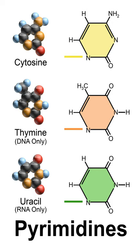In March 2015, NASA Ames scientists reported that, for the first time, complex DNA and RNA organic compounds of life, including uracil, cytosine and thymine, have been formed in the laboratory under outer space conditions, using starting chemicals such as pyrimidine found in meteorites. Pyrimidine, like polycyclic aromatic hydrocarbons, the most carbon-rich chemical found in the universe, may have been formed in red giants or in interstellar dust and gas clouds.